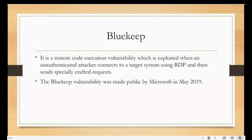BlueKeep is a remote code execution vulnerability that is exploited when an unauthenticated attacker connects to a target system using RDP and sends a specifically crafted request. The BlueKeep vulnerability was made public by Microsoft in May 2019, and the BlueKeep exploit module can be used to exploit vulnerable Windows systems and consequently provide a privileged Meterpreter session on the target system.